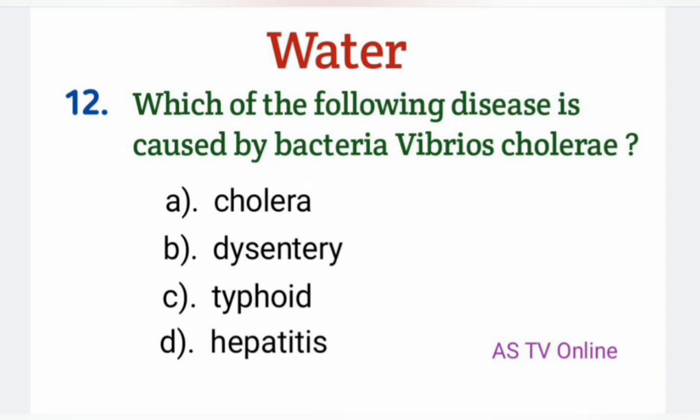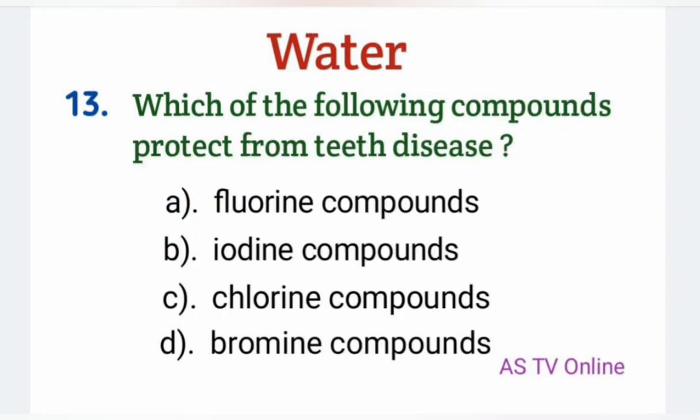No. 12: Which of the following disease is caused by bacteria Vibrio cholerae? Cholera — Is bacteria کی وجہ سے cholera disease ہوتی ہے.